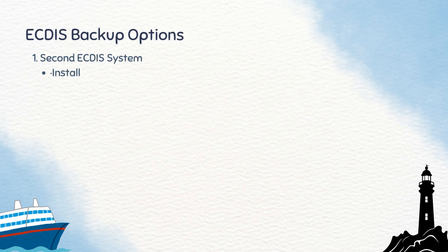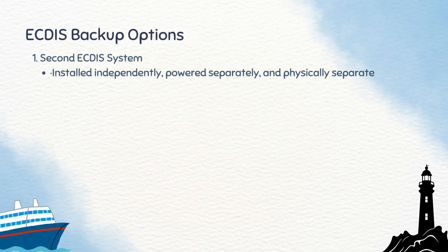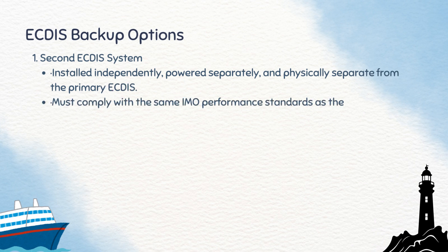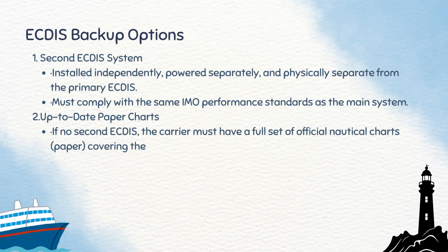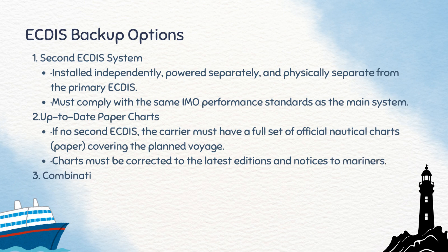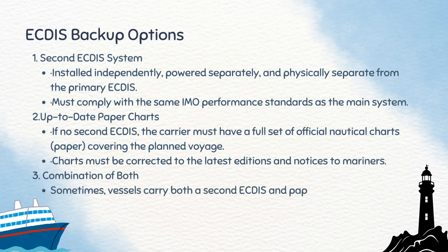ECDIS backup options: to comply with IMO requirements, every vessel must have a reliable backup in case the primary ECDIS fails. There are three options. The first is having a second fully independent ECDIS system. The second option is carrying a full set of up-to-date paper charts. And in some cases, vessels carry both for added redundancy.